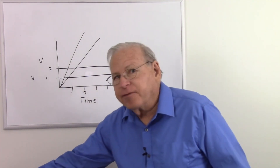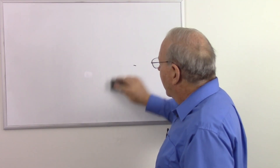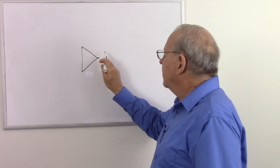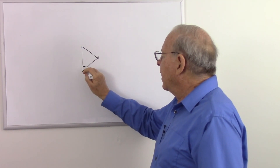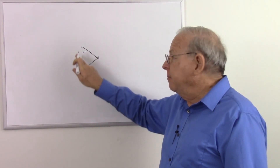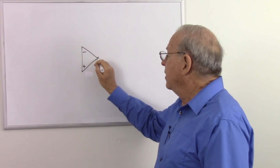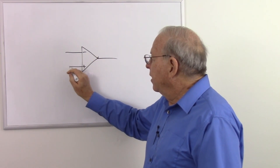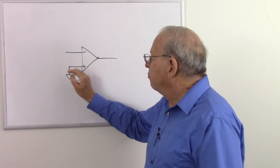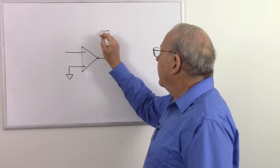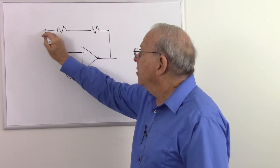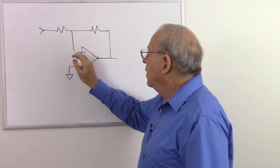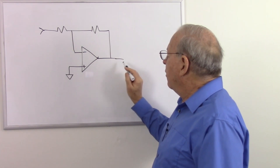To understand how the differentiator works we first need to look at the op-amp inverting amplifier. Here is our operational amplifier — it's an integrated circuit and that's the symbol for it. I like to have my non-inverting input on the bottom and my inverting input on the top. Here is our output and there are our two inputs. For the inverting amplifier, the non-inverting input goes to ground and we have our feedback resistors and our input there.